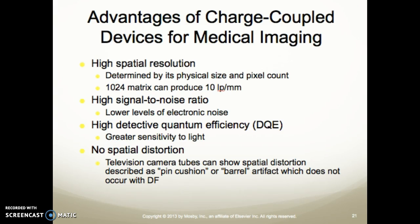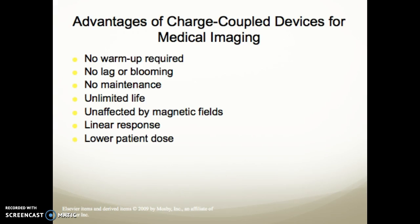Advantages of charge-coupled devices include: high spatial resolution determined by physical size and pixel count — a 1024 matrix can produce 10 line pairs per millimeter; high signal-to-noise ratio with low levels of electronic noise; high DQE with greater sensitivity to light; and no spatial distortion, unlike TV camera tubes which can show pincushion or barrel distortion. There is also no warm-up required, no lag or blooming, no maintenance, unlimited life, and the CCD is unaffected by magnetic fields, which is important when using magnetic-tipped catheters in IR or cath lab.